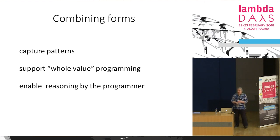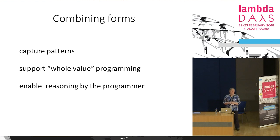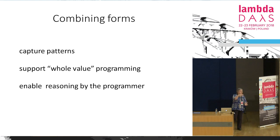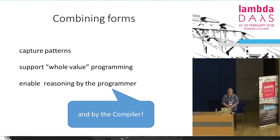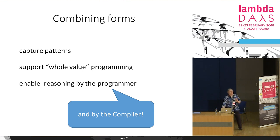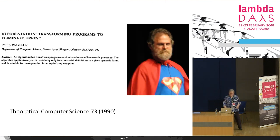So why are combining forms of higher order functions useful and important? They capture patterns of computation — they are a form of abstraction, and abstraction is important for programming and computer science. They support whole-value programming, which can be important in the presence of parallelism, such as data-parallel programming. They enable reasoning by the programmer — if you define your combining forms so they fit together nicely like Lego and have nice laws, you can reason about your programs. But importantly, they also enable reasoning by the compiler.